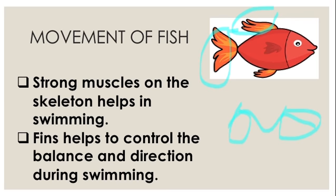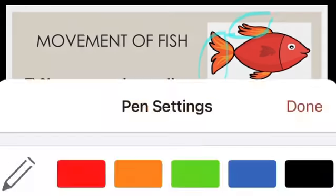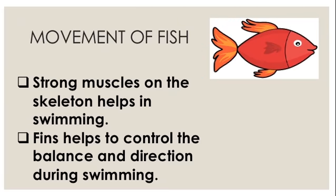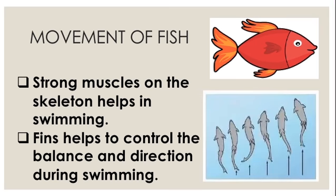This wavy structure allows the fish to move forward smoothly. The tail and the fish body move in opposite directions, and that is how they are able to move smoothly and float in water — this is how they swim.